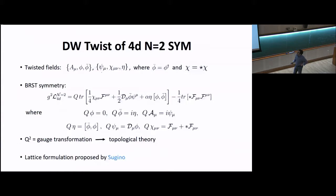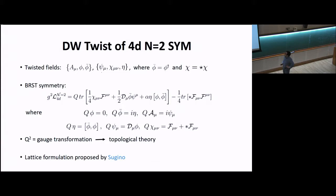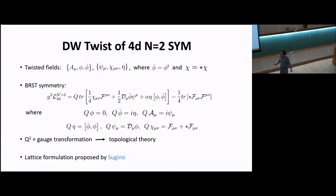After performing this twist, the bosonic fields consist of a gauge field A_mu, two scalars phi and phi-bar (where phi-bar is the hermitian conjugate of phi). One slightly unusual feature of twisted theories is that the fermions no longer have spinor indices; rather, they have vector indices, so they can transform as scalars, vectors, or two-forms. The two-form chi_mu_nu is self-dual. Furthermore, Witten showed that the Lagrangian can be written in a very intriguing form that looks like the theory has a BRST symmetry, where the first term is BRST-exact and the second term is BRST-closed.